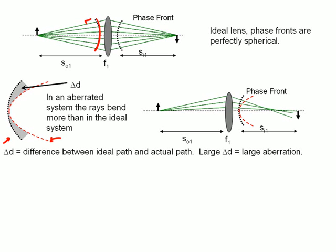And we quantify the amount of deviation, the amount of aberration, by a term delta d, and delta d is just the difference between the ideal path and the actual path. So this shaded region in here corresponds to the value of delta d. So you can see it's close to zero near the optical axis. Delta d gets very large as you move out further away from the optical axis.